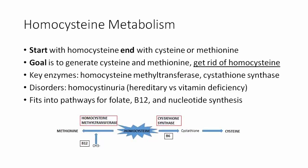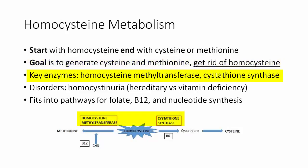For this pathway, we're going to start with homocysteine and end with either cysteine or methionine. The goal is to generate cysteine and methionine, but most importantly we need to focus on the purpose of getting rid of homocysteine. Key enzymes involved are homocysteine methyltransferase and cystathionine synthase. The main disorder associated with this pathway is homocysteinuria, which can either be hereditary or result from vitamin deficiency.